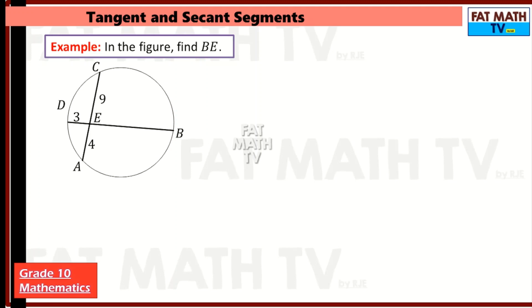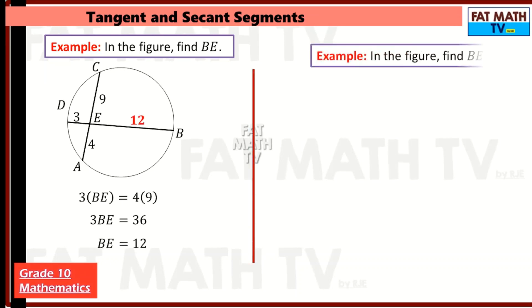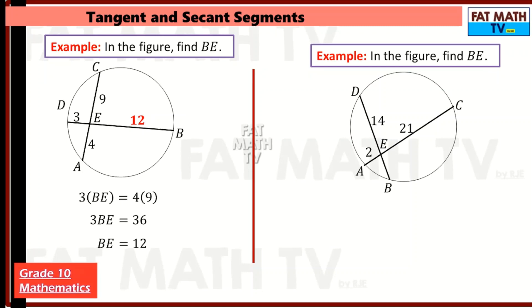Another example: we have 4 and 9, and this segment is 3. What is BE? BE equals 4 times 9 divided by 3, so 36 divided by 3 is 12. For the next one, 2 times 21 must equal 14 times BE. So 2 times 21 is 42, and 42 divided by 14 is 3. BE is 3 units.